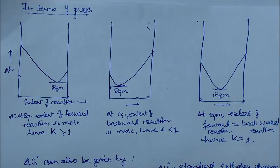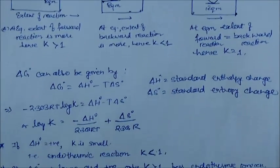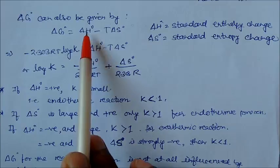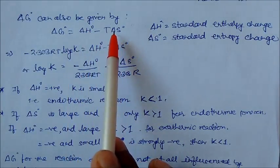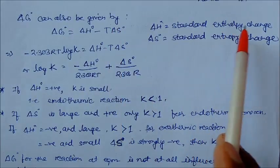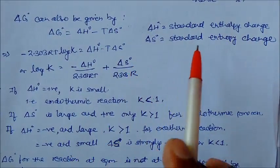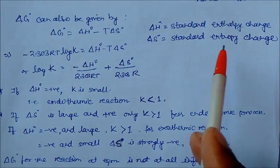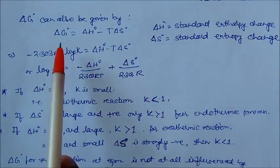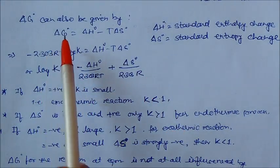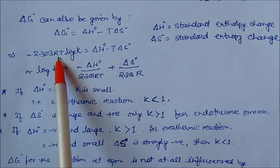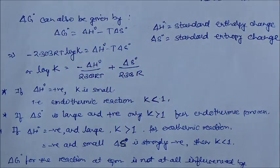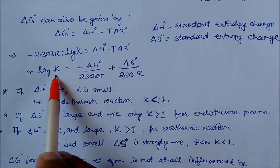The standard free energy can also be expressed as: delta G° = delta H° − T·delta S°, where delta H° is the standard enthalpy change and delta S° is the standard entropy change — entropy being the randomness of the system. Substituting at equilibrium where delta G° = −2.303RT log K, we get: −2.303RT log K = delta H° − T·delta S°.